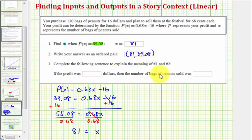And now we're asked to complete the sentence again. It says, if the profit was blank dollars, then the number of bags of peanuts sold was blank. So the profit is the output, or function value, of 39.08, or 39 dollars and eight cents. So if this was the profit, then the number of bags sold was the input, or x value, of 81.